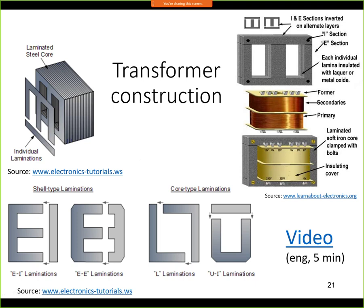Other less common lamination types include EE lamination with two E-shaped sections, LL lamination with two identical sections rotated 180 degrees, and UI lamination.